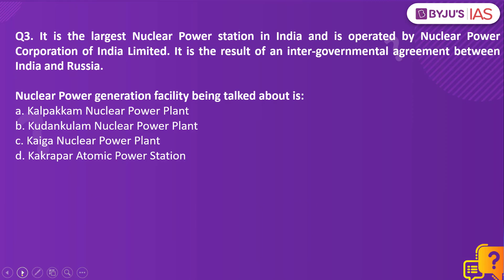Now let us take up question number three. It is the largest nuclear power station in India, operated by Nuclear Power Corporation of India Limited, and is the result of an intergovernmental agreement between India and Russia. The options are: option A, Kalpakkam Nuclear Power Plant; option B, Kudankulam Nuclear Power Plant; option C, Kaiga Nuclear Power Plant; option D, Kakrapar Atomic Power Station. The right answer is option B — Kudankulam Nuclear Power Plant. It is located in coastal Tamil Nadu, built in joint collaboration with Russia through an intergovernmental agreement, and is the largest nuclear power station in India operated by NPCIL.